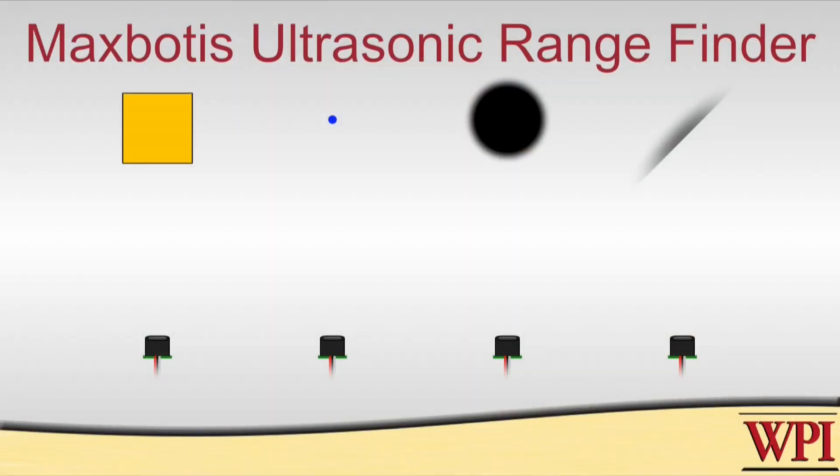As we discussed a few minutes ago, having to do with the Sharp IR sensor, the characteristics of the object that you're trying to measure the distance to matters as well. So, if you're trying again to measure a pencil or detect a pencil that's, you know, 20 feet away, ultrasonics may or may not work very reliably.